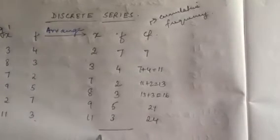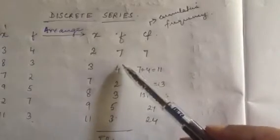The summation of frequencies (n) is: 7+4+2+3+5+3 = 24. Now, the median formula is the (n+1)/2 th term. So that is (24+1)/2 = 25/2 = 12.5th term.